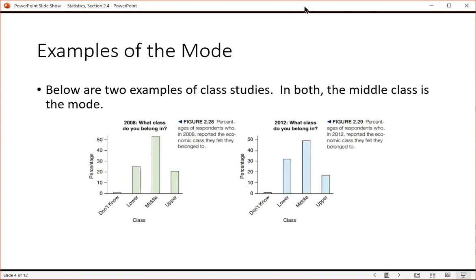Here's a couple examples. Below are two examples of class studies, class at a society level. In both, notice that the middle class is the mode, so the tallest bar is going to be the mode.